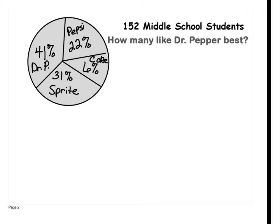When asked how many like Dr. Pepper best, they give you 41%. Does that tell me 41 students like Dr. Pepper? No. What we're trying to do is find the part. They're giving us the percentage and the whole. To find the part, we take 0.41 — we change 41% to a decimal — and we times it by 152. To find part, we take the percent times the whole. So I take 0.41 times 152.